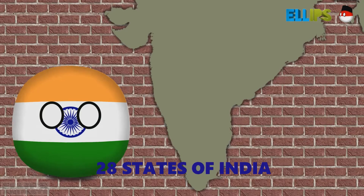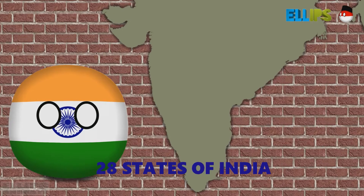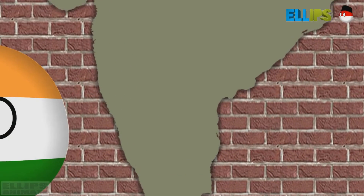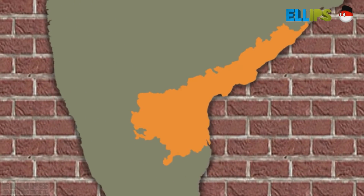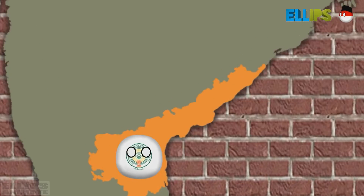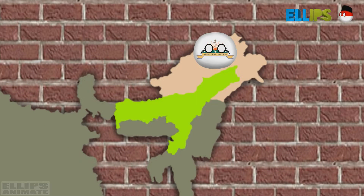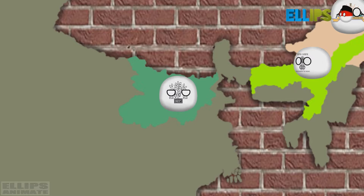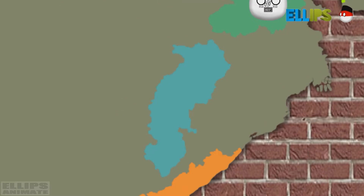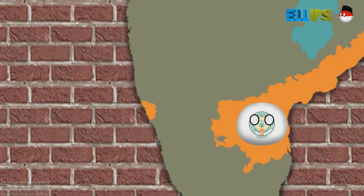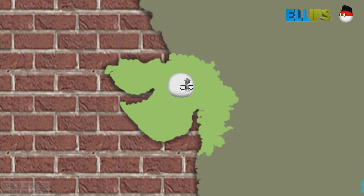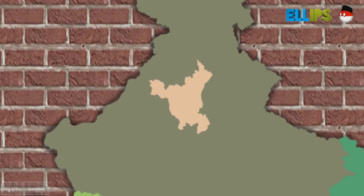There are 28 states in India, namely Andhra Pradesh, Arunachal Pradesh, Assam, Bihar, Chhattisgarh, Goa, Gujarat, Haryana.